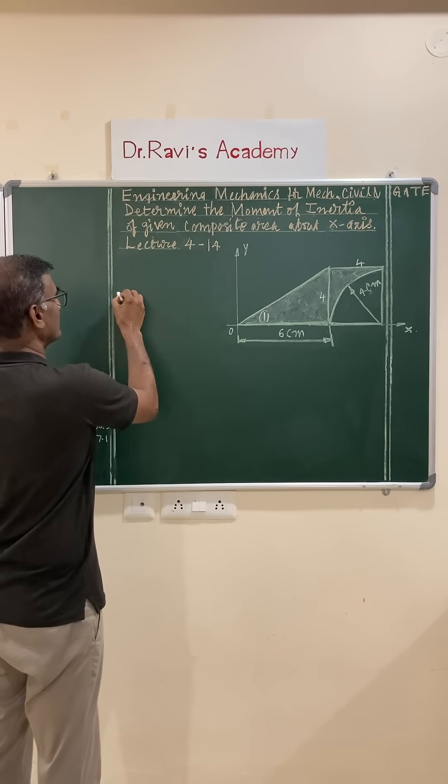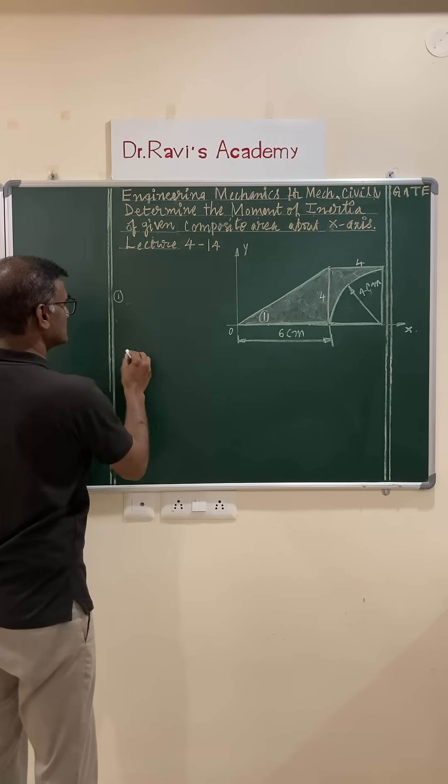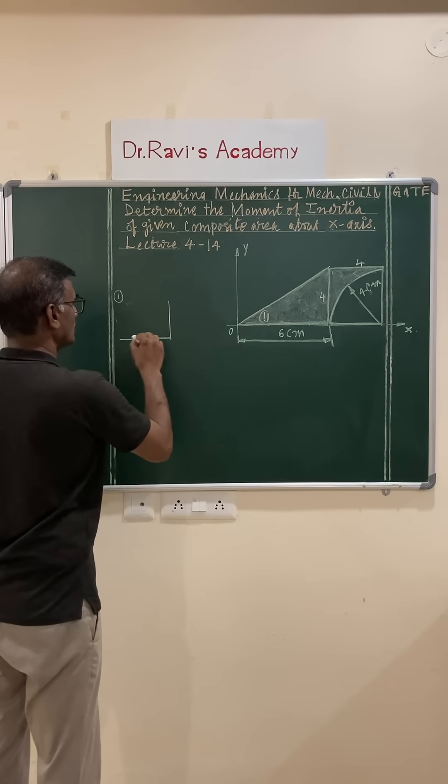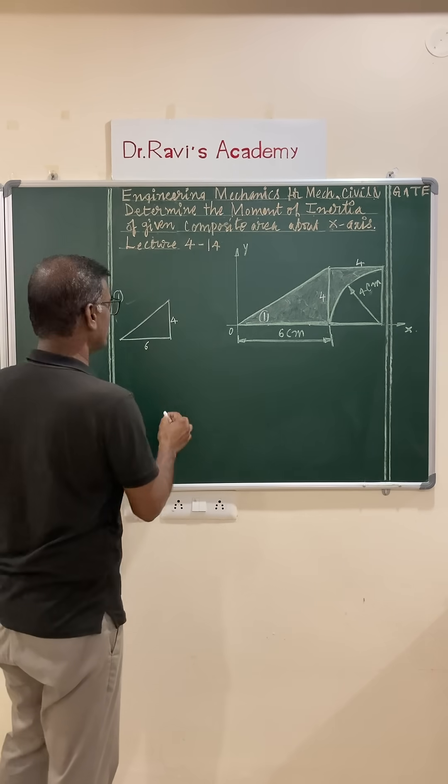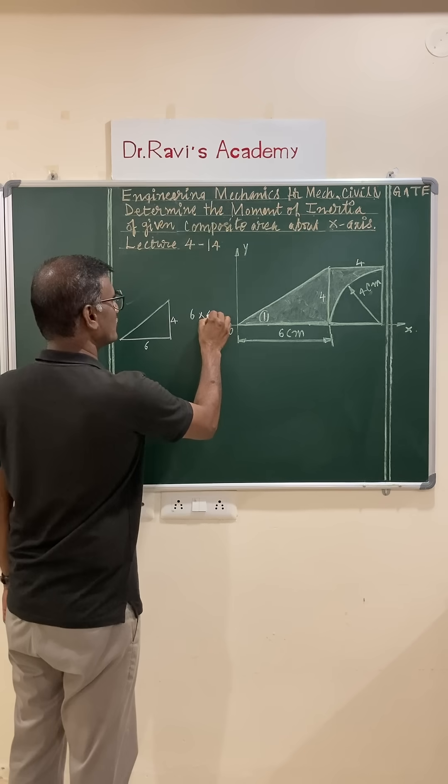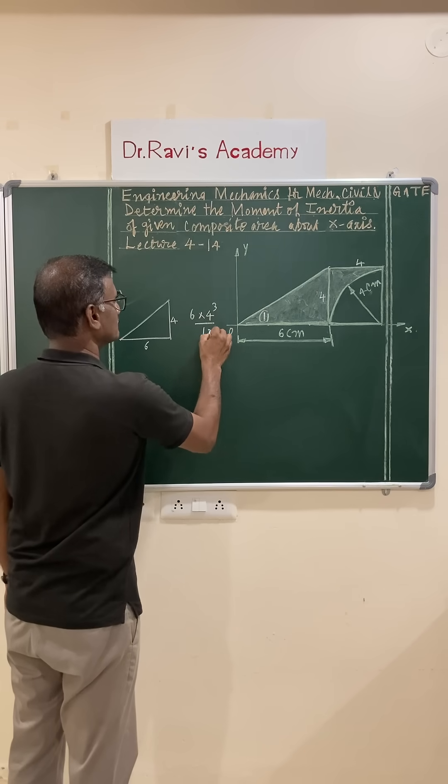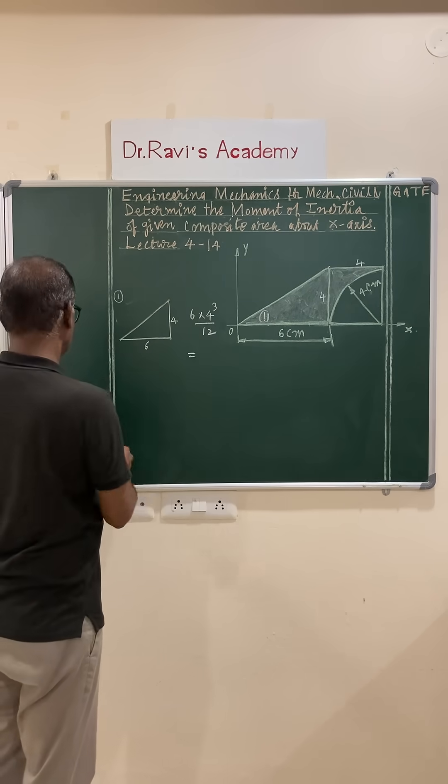You can consider figure 1 that is the right triangle of base 6 and height 4. The formula, you know, it is BH cube. B is 6 and H is 4 cube by 12. And this value is 32.